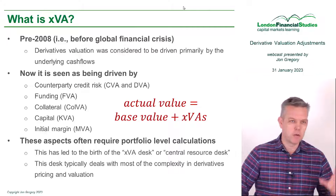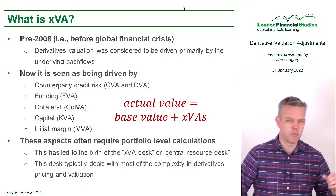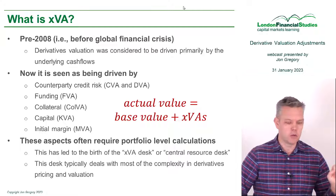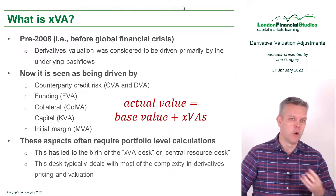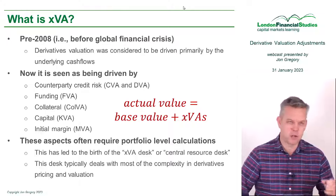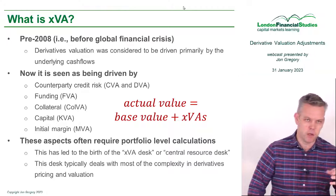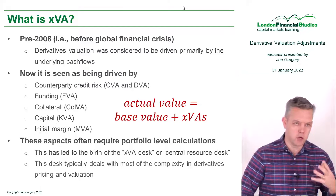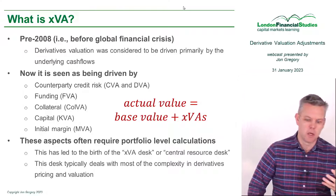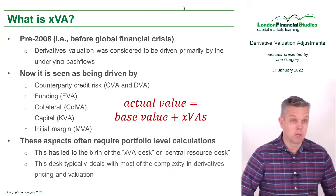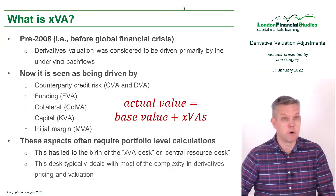So we really imagine that we've got this very simple formula: the actual value that we want is given by some sort of base value plus all the relevant XVA adjustments. These adjustments are often going to be negative as costs, but they can potentially be positive as well.